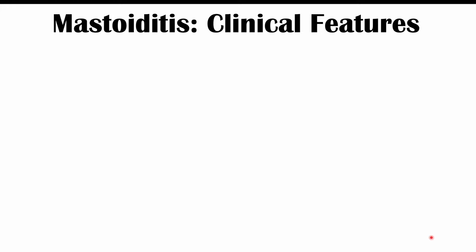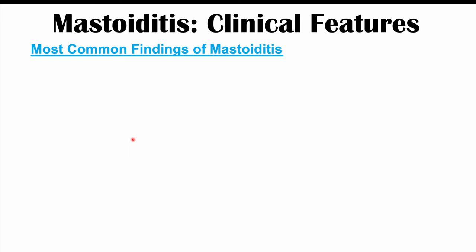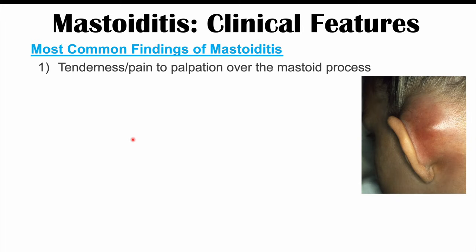Let's talk about the clinical features of mastoiditis. Because this is a complication of acute otitis media, we will see signs and symptoms of acute otitis media, including fever, ear pain, possible signs of an upper respiratory tract infection, and in children, pulling on the ear flap for pain relief. With regards to mastoiditis specifically, common findings include tenderness and pain to palpation over the mastoid process. Looking behind the ear, it can be reddened, swollen, and very tender to touch — this is often a hallmark finding.